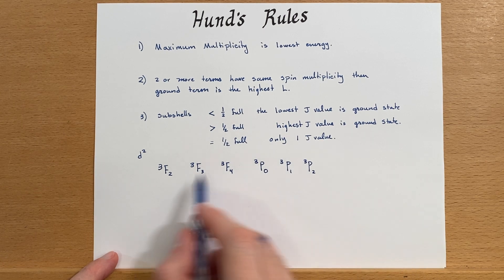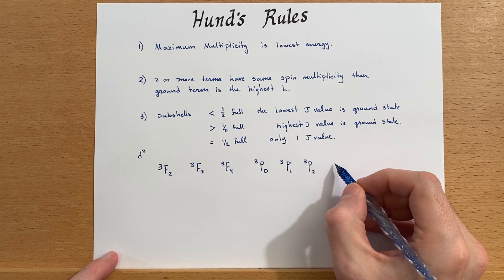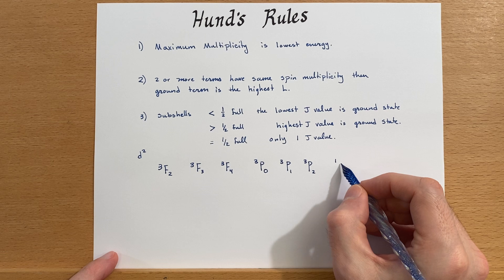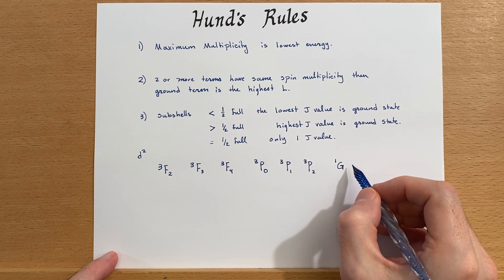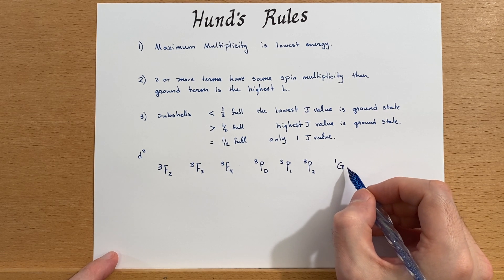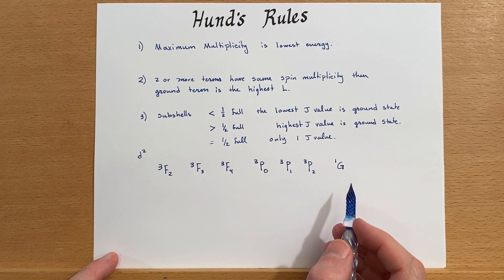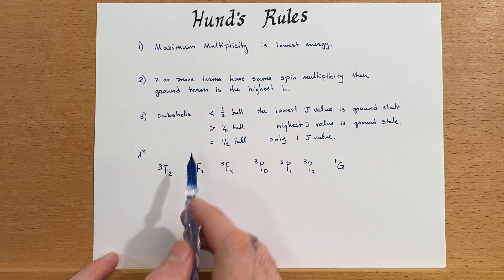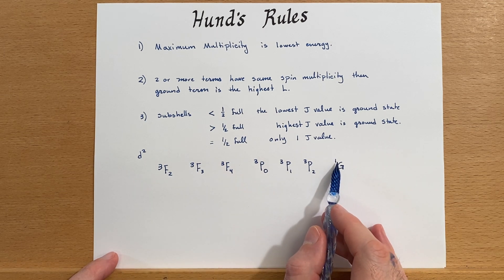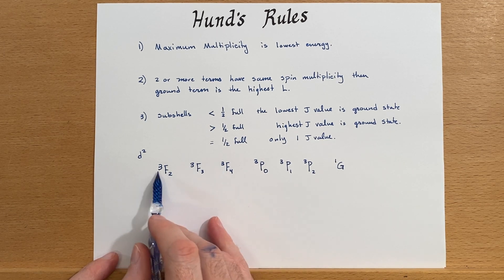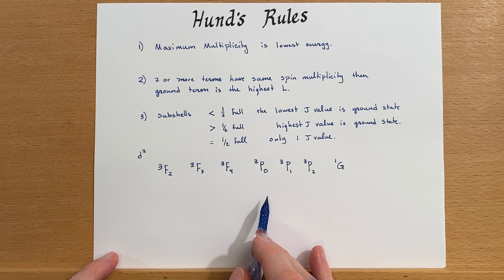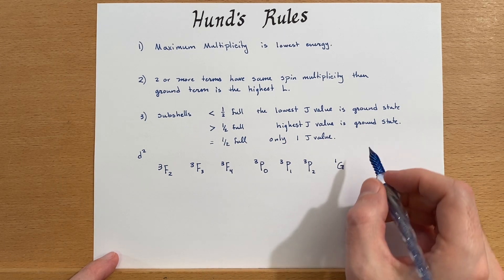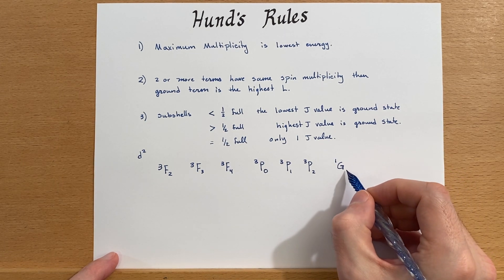Now we're done with the triplet states and can move on to singlet G. G has the highest L value out of everything indicated here, but rule number one takes precedence. That's why the triplet states are lower in energy than the singlet states, even though singlet G has a higher L value.